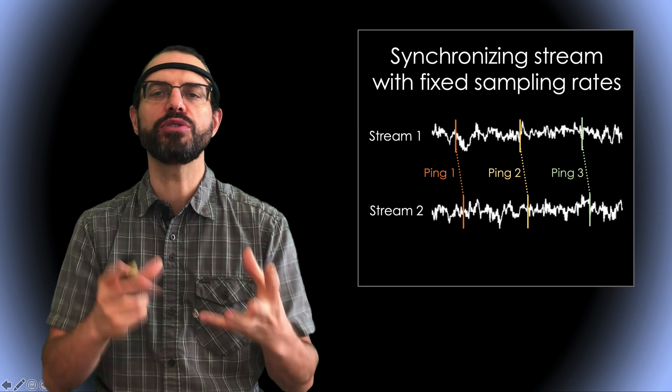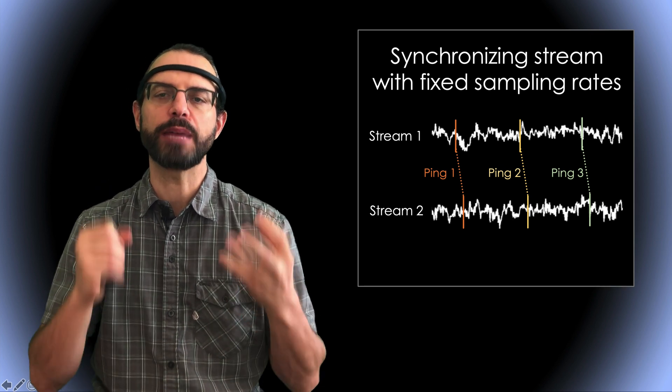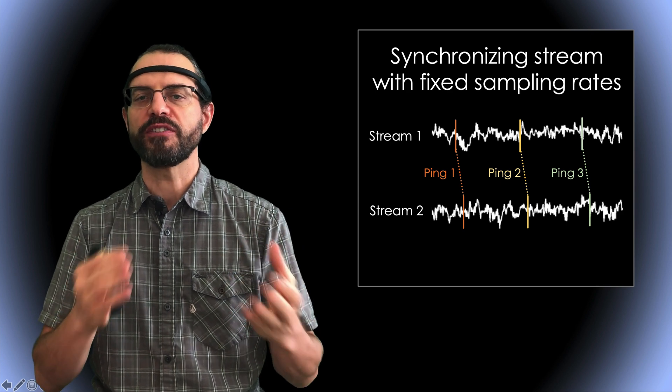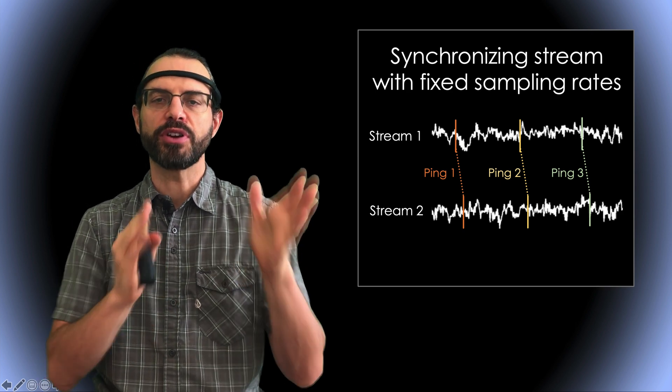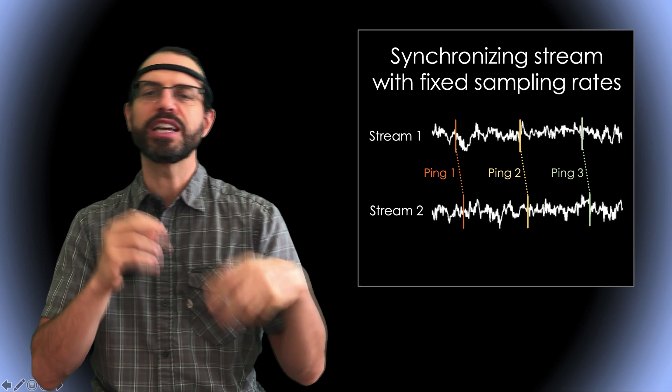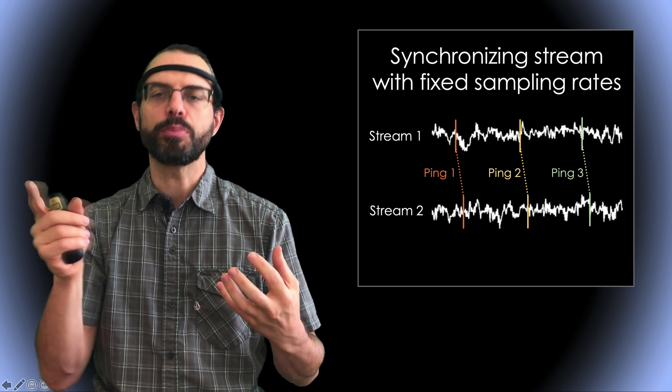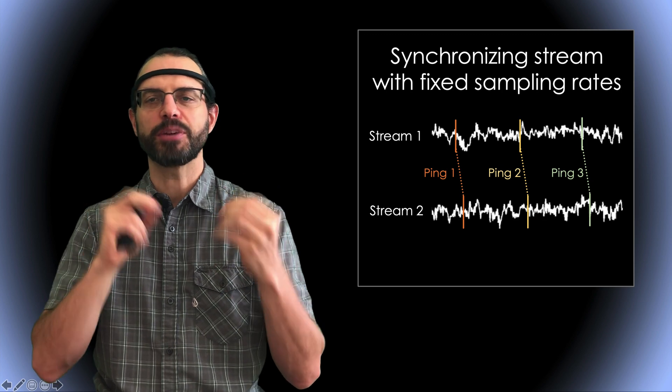If you're using continuous streams with fixed sampling rates, it's not so important. Since the sampling rates are fixed, you simply have to align them the best you can using all the available ping times. So if you have jitter on some of the pings, it's not a big deal as they'll be averaged out. However, if you have streams with irregular sampling rates, such as discrete events, it's important to check that your setup supports proper synchronization using LSL.